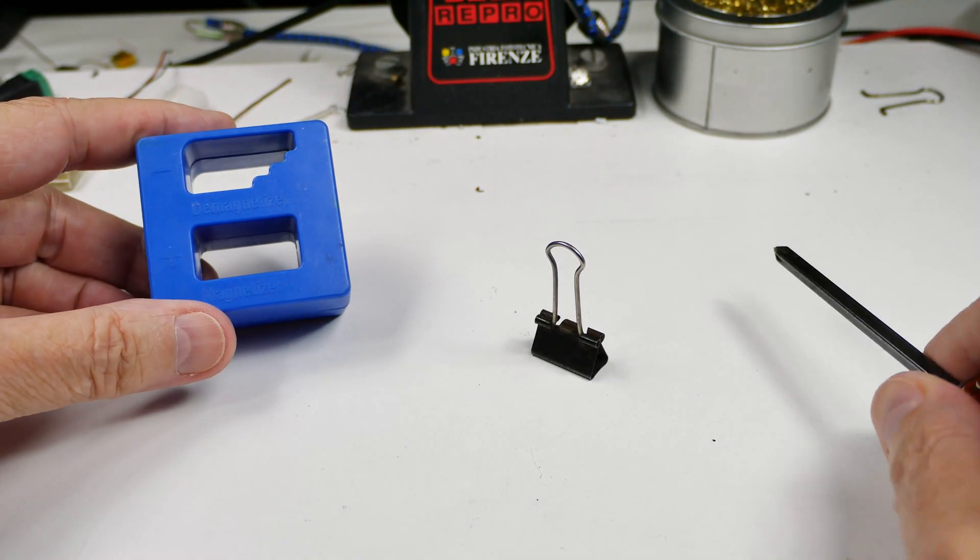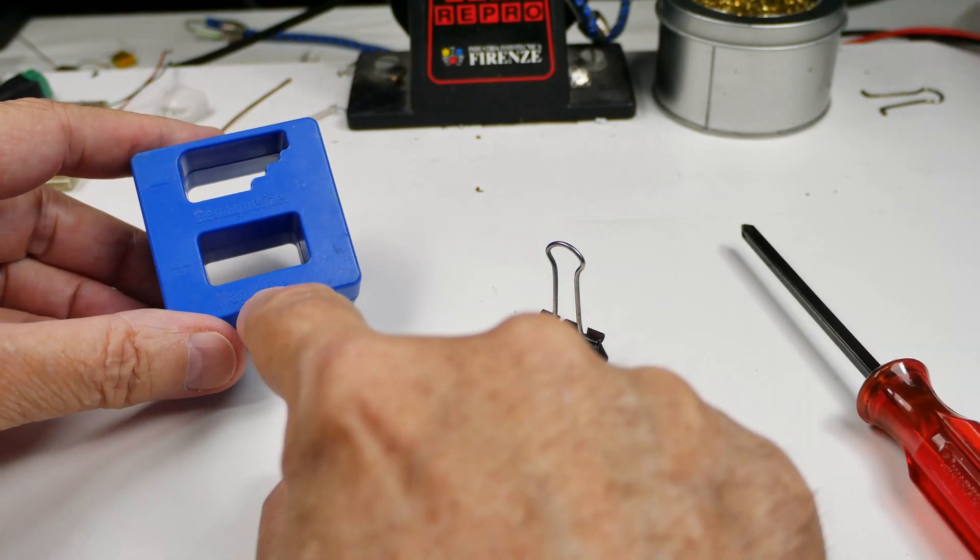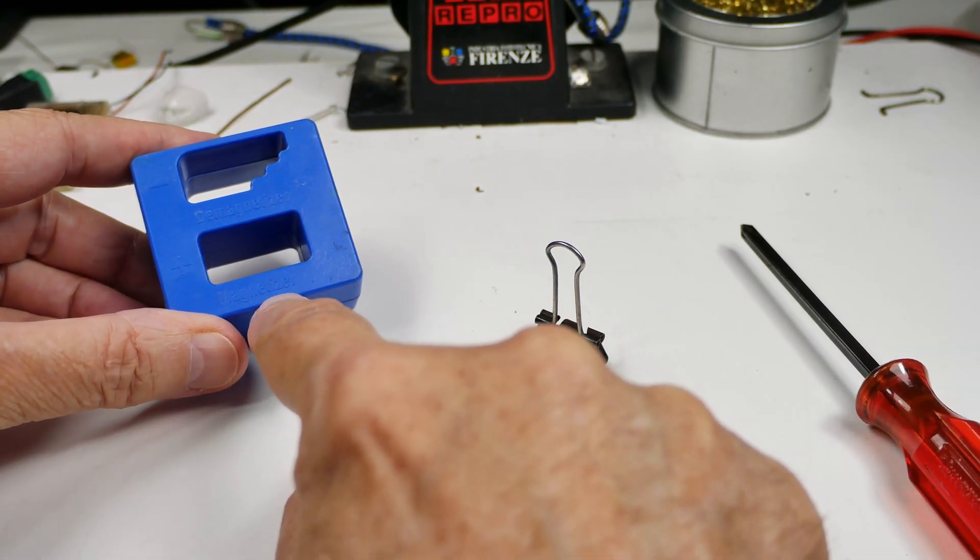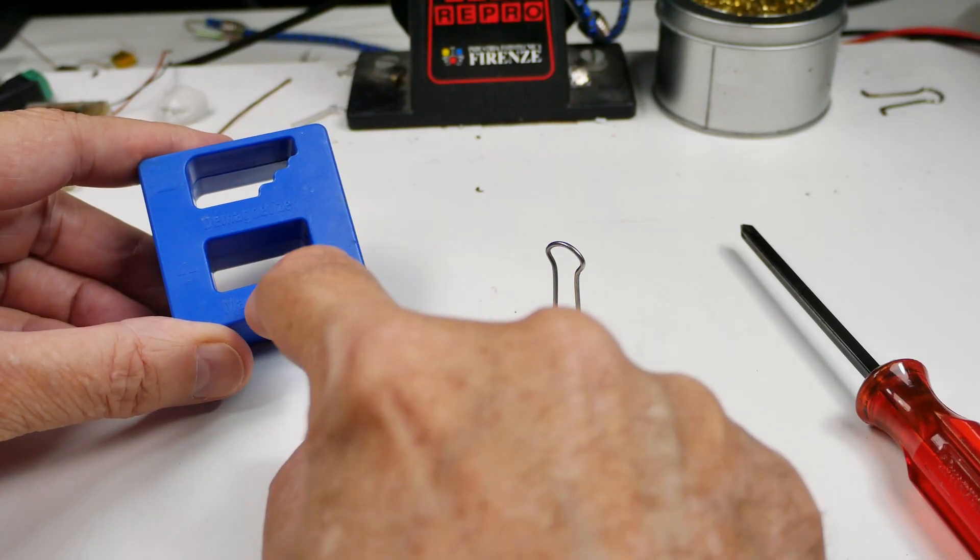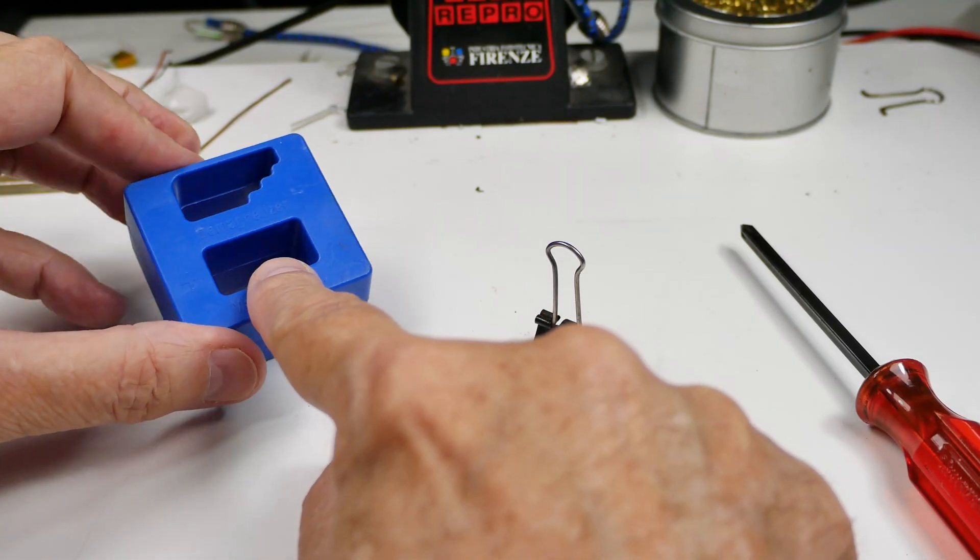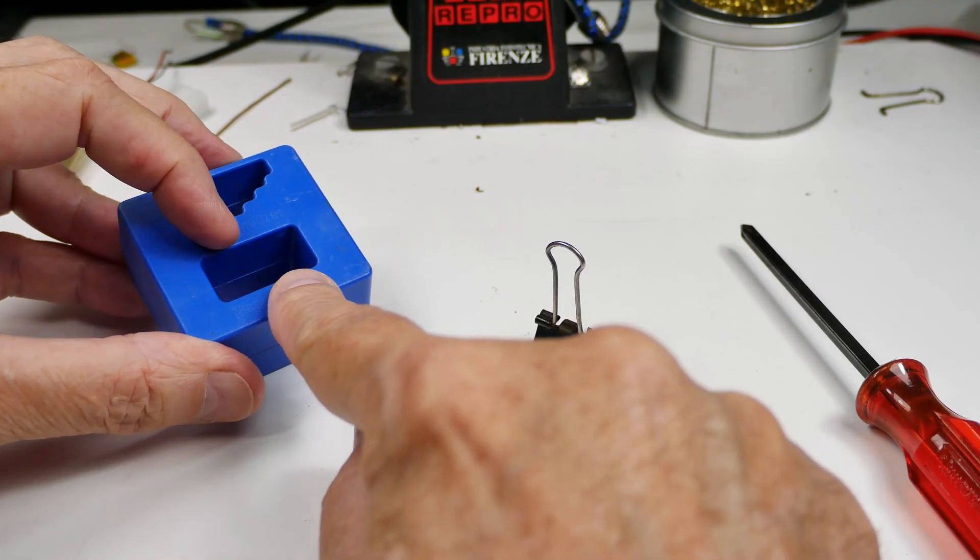What this is doing is you have two magnets—one here underneath where it says magnetizer and the other one underneath where it says demagnetizer. These two magnets are facing each other so they're repelling. It's either north-north or south-south.